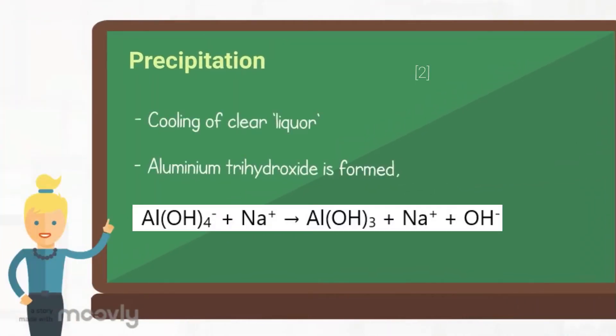During precipitation, the clear liquor is being cooled and aluminium trihydroxide is formed.